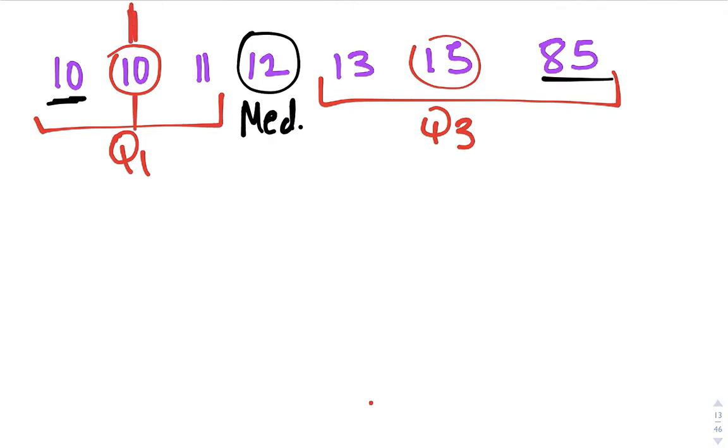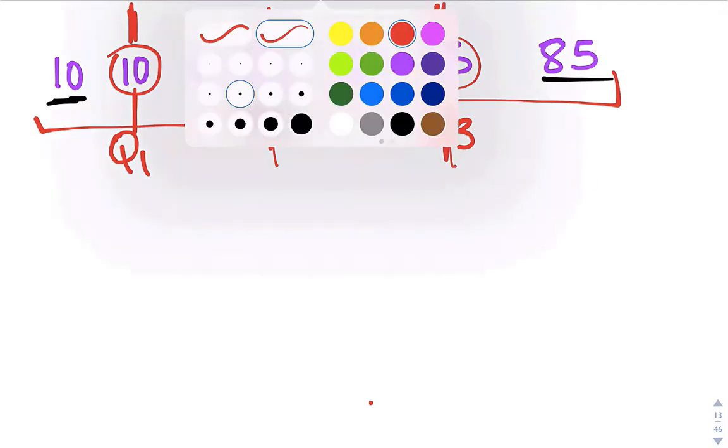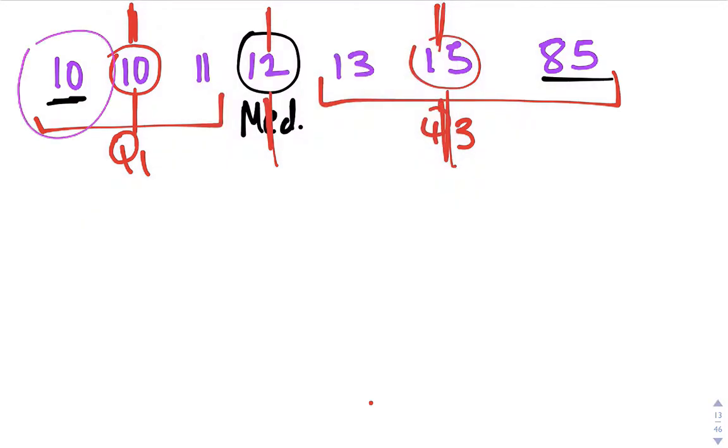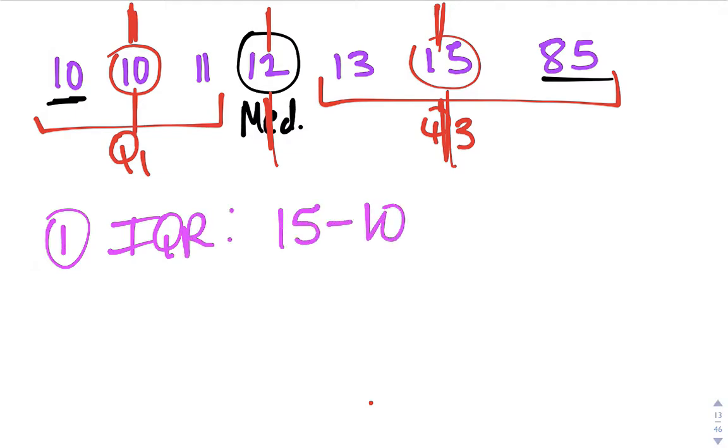As you can see, if I draw these lines down here we split this into four quarters. That's why they're called quartiles. You have the same amount of data in each quartile. Okay, so finding an outlier. Here are the steps that we've looked at before. The first step besides finding the five number summary is to find the interquartile range. In this case it's 15 minus 10, which is five.